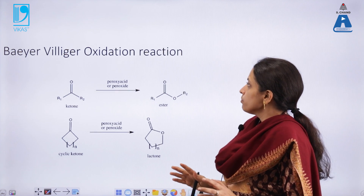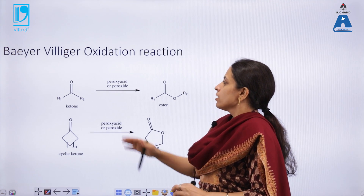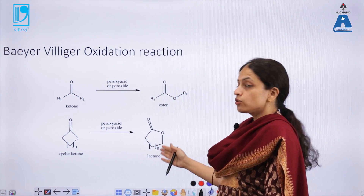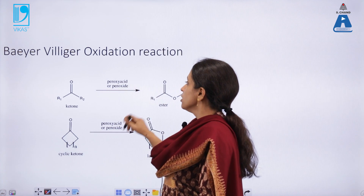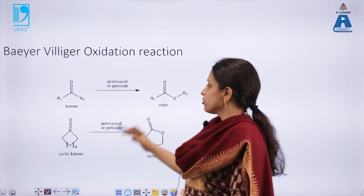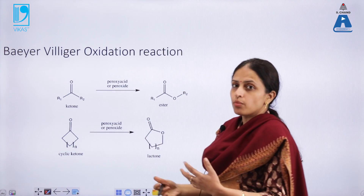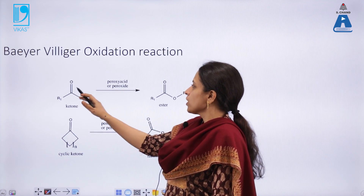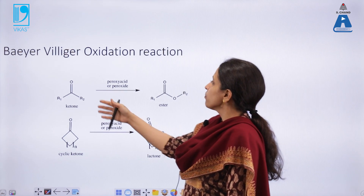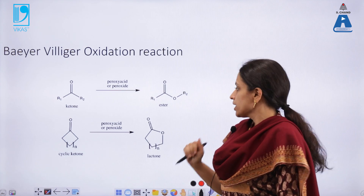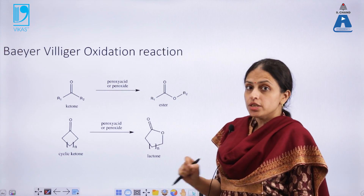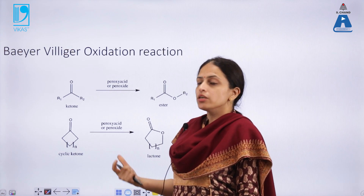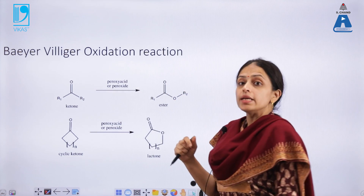An important oxidation process of carbonyl compounds is Baeyer-Villiger oxidation, where a ketone or cyclic ketone can be converted into the corresponding ester or lactone. Lactones are cyclic esters. In this process, peroxide protonates the oxygen of the carbonyl group, making it more susceptible to attack by peroxide, leading to the formation of the corresponding ester or lactone. Baeyer-Villiger oxidation is a key reaction in synthesis because it rapidly converts a carbonyl group into an ester moiety.